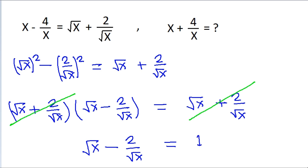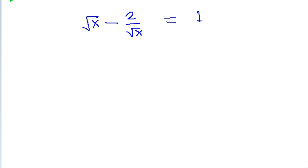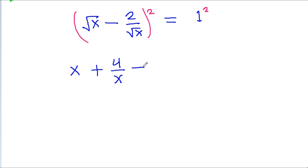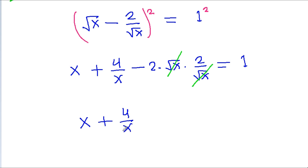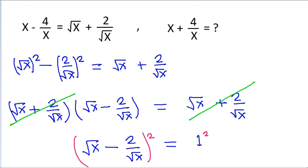If we square both sides, then root x squared is x, and 2 by root x squared is 4 by x, minus 2 times root x times 2 by root x. That equals 1 squared which is 1. Root x cancels and we get x plus 4 by x equals 1 plus 4, which is 5. So x plus 4 by x is equal to 5.